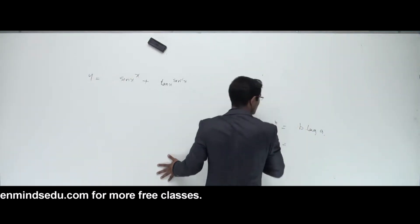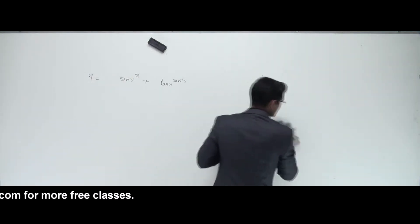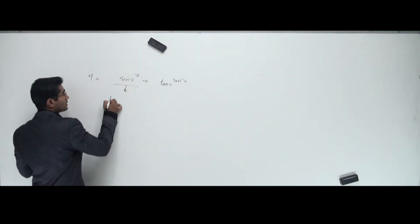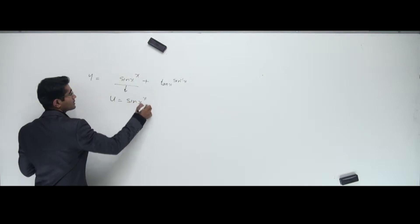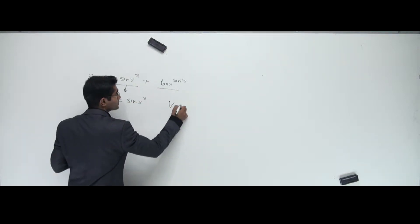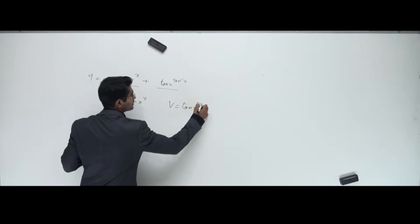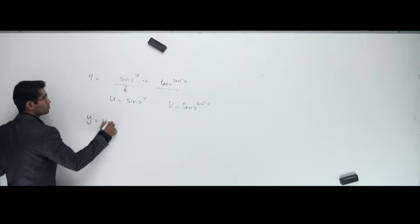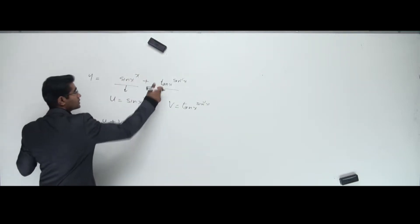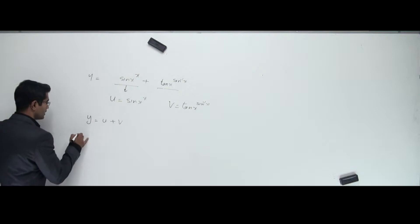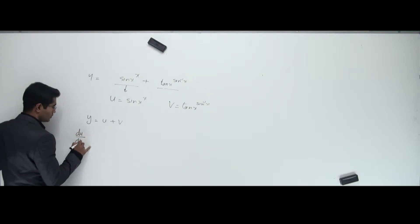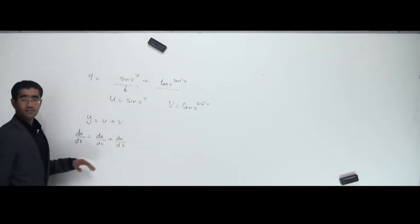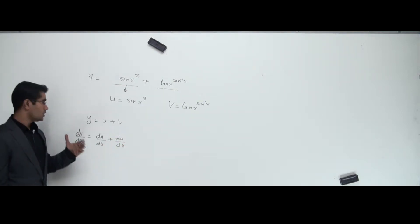If you know this, you're done with the complete concept of logarithmic differentiation. What I do is take the first term separately and write u = sin x to the power x, and take the second term as v = tan x to the power sin⁻¹x. So my original question becomes y = u + v. Differentiating, dy/dx = du/dx + dv/dx. That's it — but now we need to find who du/dx and dv/dx are.